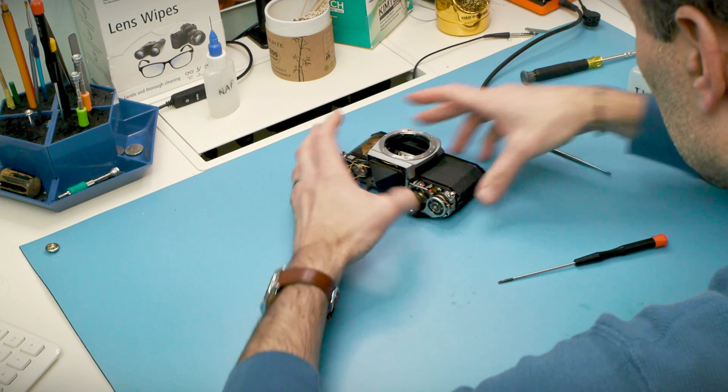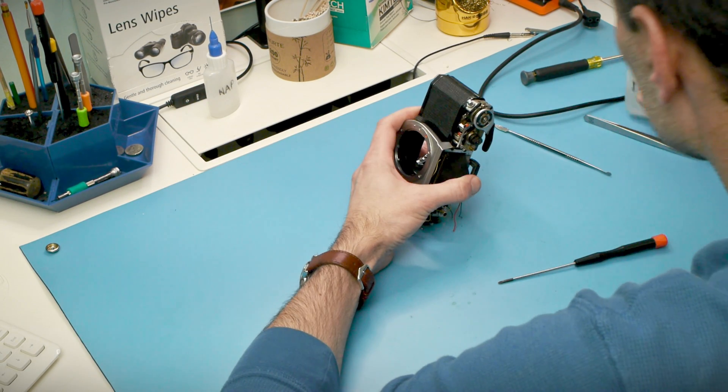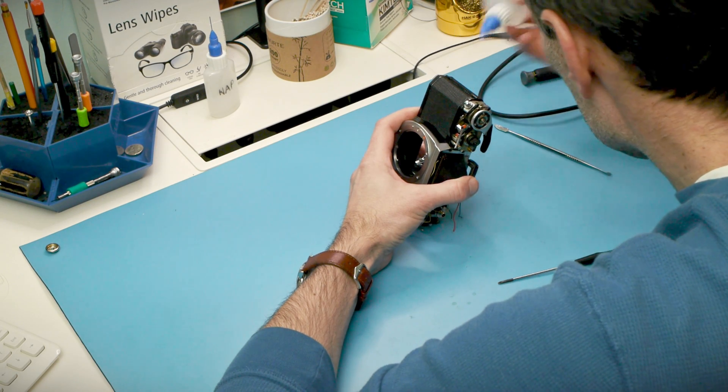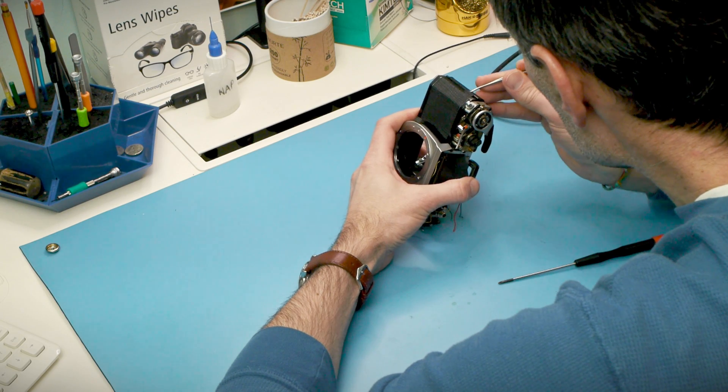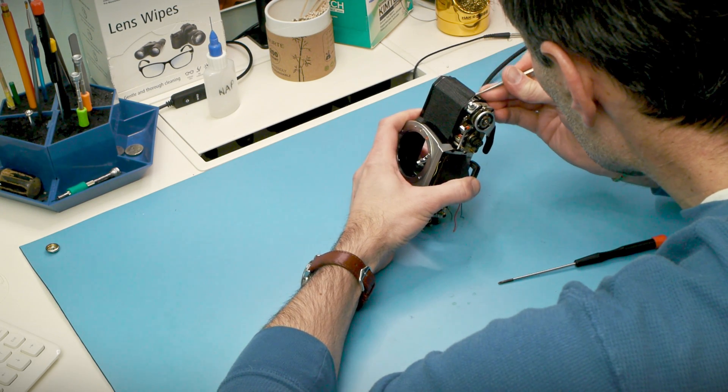It also helps that Pentax's leatherette in particular is really easy to work with. Some brands are notorious for having delicate or degraded camera coverings but the stuff on K-mount cameras is bomb proof. It's tough, it's flexible, you can clean it with solvents, and it's exactly the same size as it was in the factory 40 years ago.